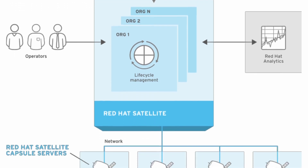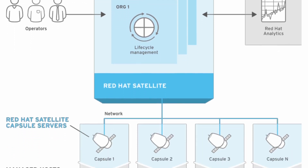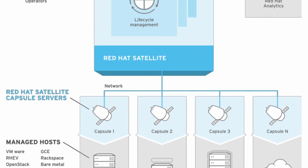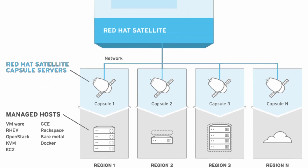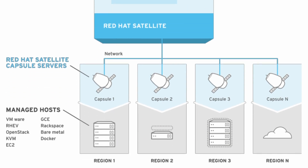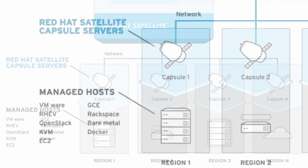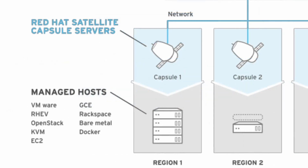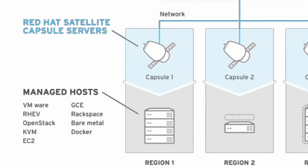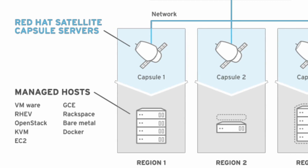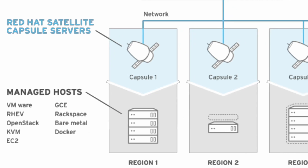Another part of Satellite 6's infrastructure is what's known as a capsule. A capsule server provides certain services to a particular group of systems for the purposes of provisioning and configuration. These services include package management and DHCP.